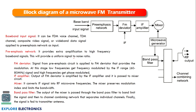Now looking at the transmitter block diagram for microwave communication. We have a baseband signal as input — this is the information to be sent, which can come from an FDM (frequency division multiplexing) channel or a TDM input. This baseband input is given to the pre-emphasis network.